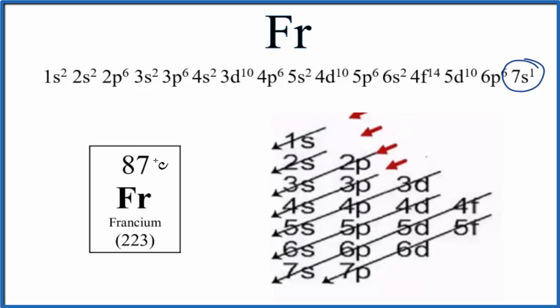First off, we need to know that francium, on the periodic table, its atomic number is 87. It has 87 protons, and since it's neutral, there's no negative or positive sign after it, it'll have 87 electrons. All these numbers here are going to add up to 87 when we're done.